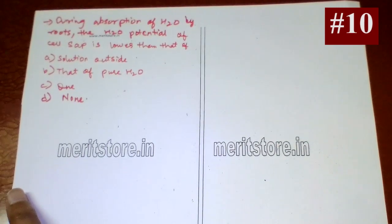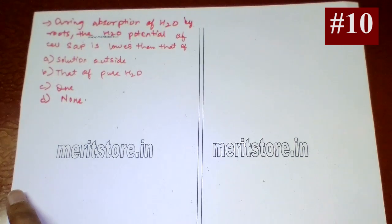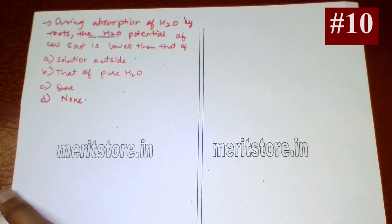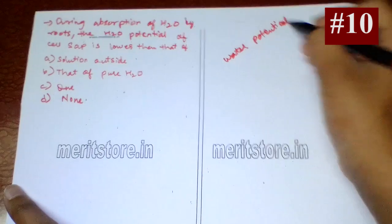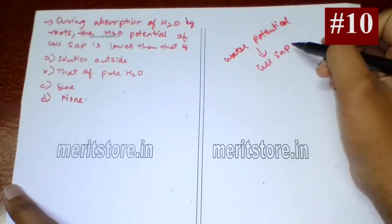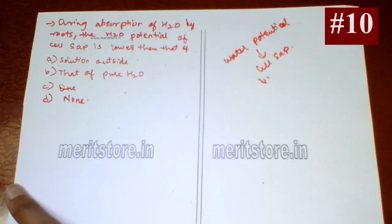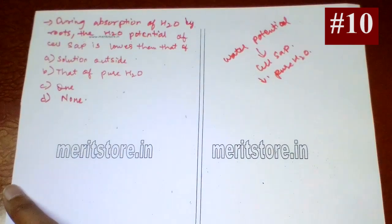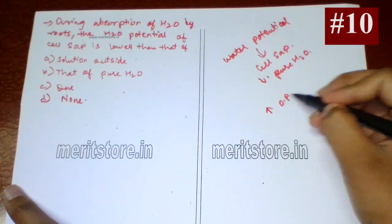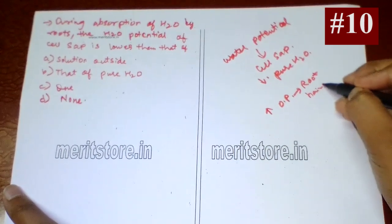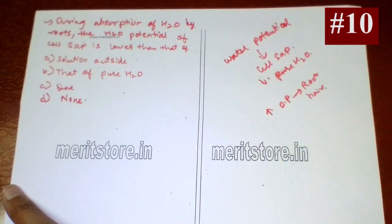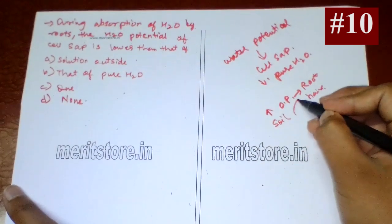During absorption of water by roots, the water potential of the cell sap is lower than that of pure water. Due to the higher osmotic pressure of water in root hair, water from the soil passes into the root hair. So option B is the correct answer.